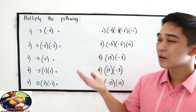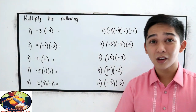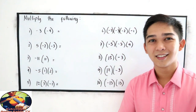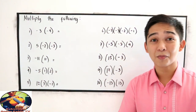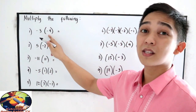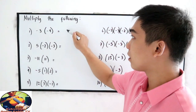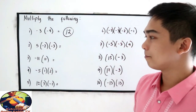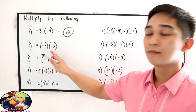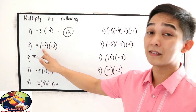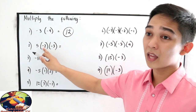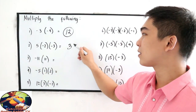Now look at numbers 1 to 10. You can pause the video to try answering. Number 1: negative 3 times negative 4 — negative times negative, so the sign is positive — 3 times 4 is positive 12. Number 2: 5 times negative 2 times negative 3 — negative times negative is positive, times positive is positive — 5 times 2 is 10, times 3 is 30, so positive 30.